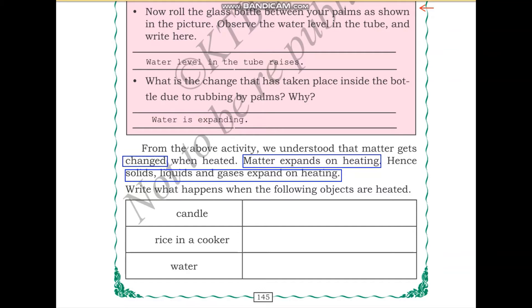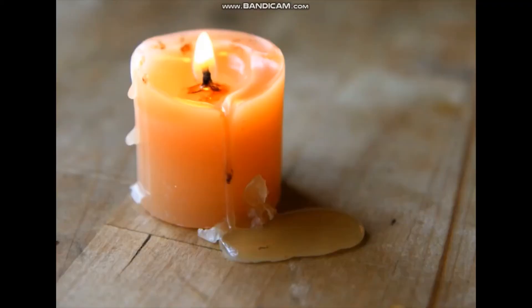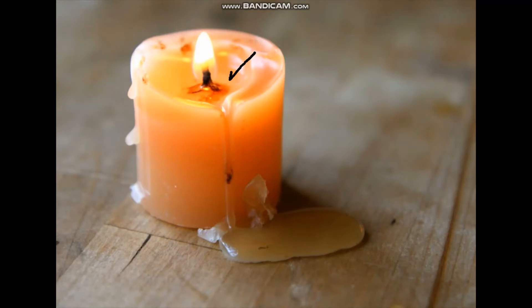What happens when the following objects are heated? I will show you a picture of a candle. The candle melts when the flame is on — the candle wax melts and liquefies. You can see that it is flowing down as a liquid.